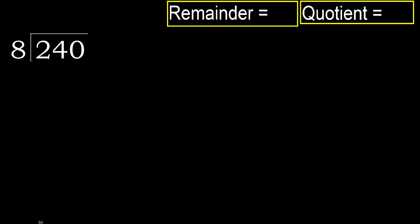240 divided by 8. 2 is less, therefore next. 24 is not less, therefore with 24. 8 — multiply by which number is nearest to 24?